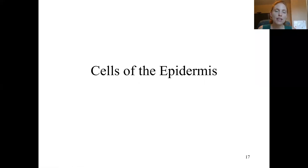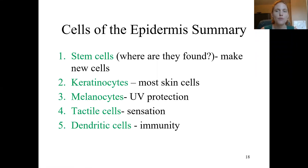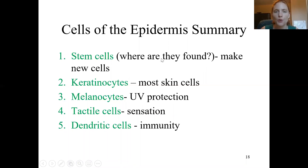Here we are in the second piece of the integumentary system lecture. We've already talked about the layers of the epidermis, and now we're going to talk about the cells of the epidermis — there are five of them. We've already talked about the first one, the stem cells. Those are the ones that undergo mitosis to make more cells, regenerating the tissue. They're found in the stratum basale at the bottom.